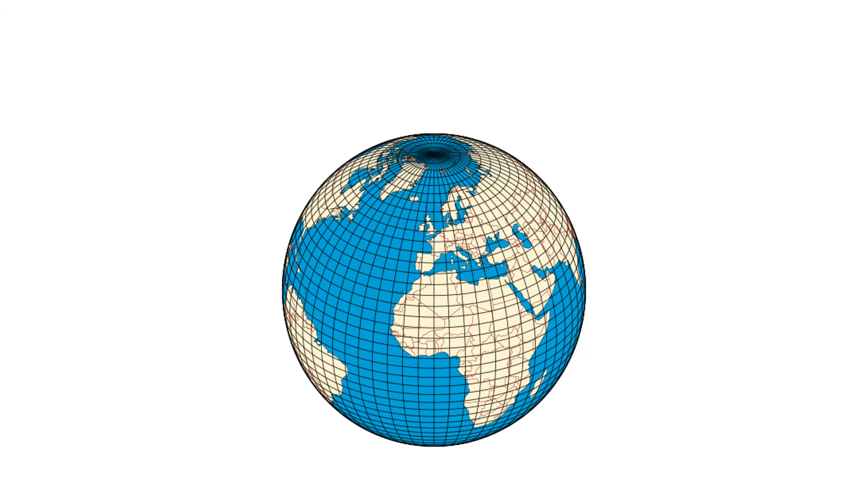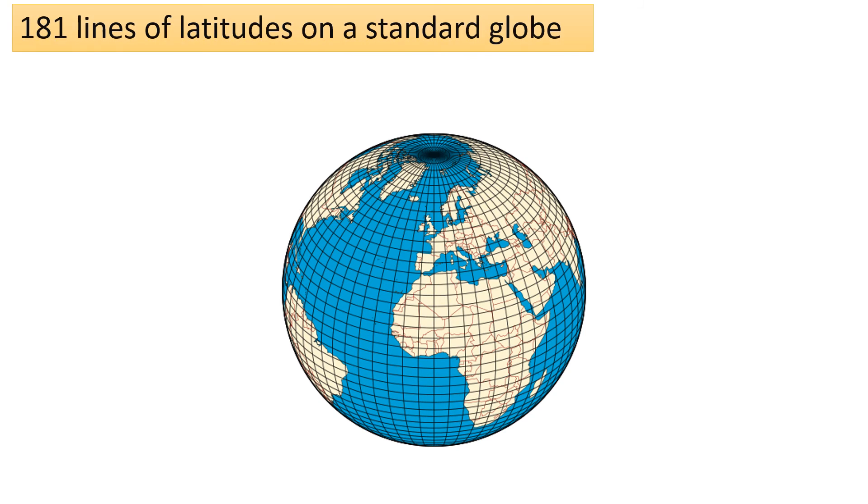Latitudes are typically spaced at intervals of one degree, with the equator included. Therefore, there are 181 lines of latitude on a standard globe.